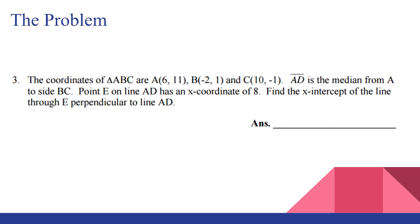Point E on line AD has x-coordinate of 8. So if you want to find point E from the x-coordinate, you probably want to get it into y-intercept form. So we need to find AD in y-intercept form. And then find the x-intercept of the line through E perpendicular to AD. So now we need to find another line and then find the x-intercept of that line. So there's three steps to this.